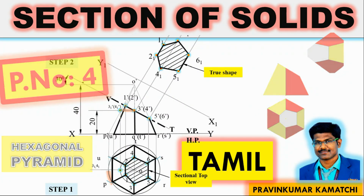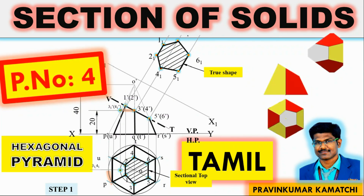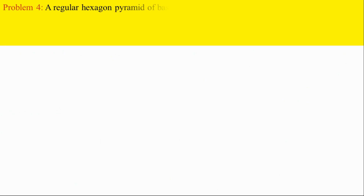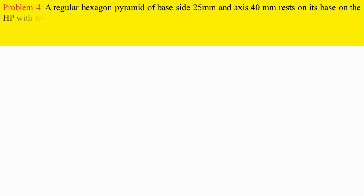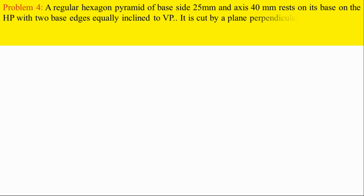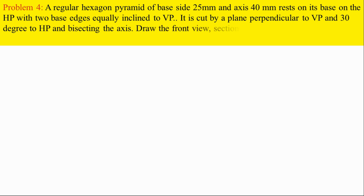Welcome. In the section of solids, problem number 4: solid 10, hexagonal pyramid. Problem note: a regular hexagonal pyramid of base side 25mm and axis 40mm rests on its base on the HP, with two base sides equally inclined to the VP. It is cut by a plane perpendicular to VP and 30 degrees to the HP and bisecting the axis. Draw the front view, sectional top view, and true shape of the section.